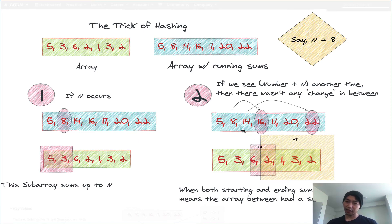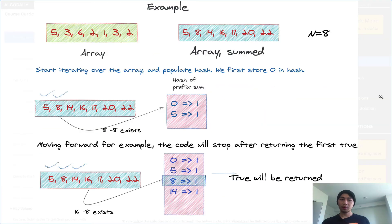But suppose we were to see 8 again in this running sum array. That would mean that the change from 8 to wherever the next 8 appeared is zero. Now, let's build upon that intuition by looking at another example and see if we can find an optimal solution to this problem.